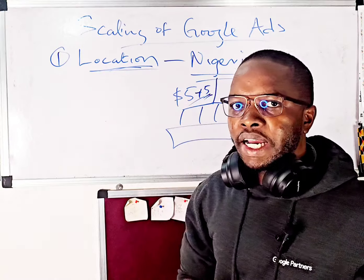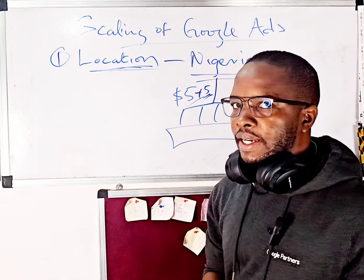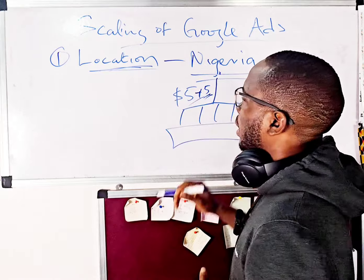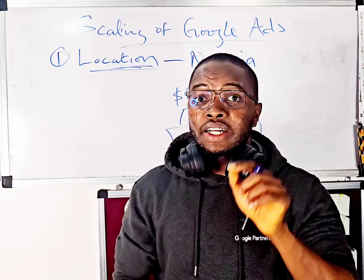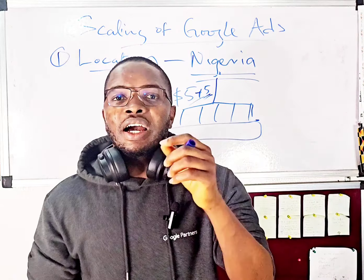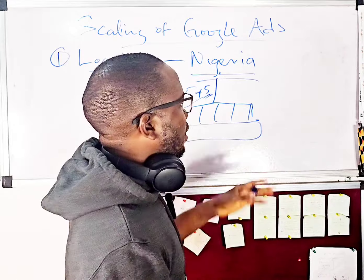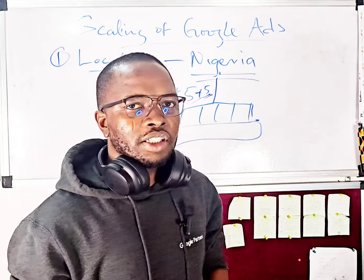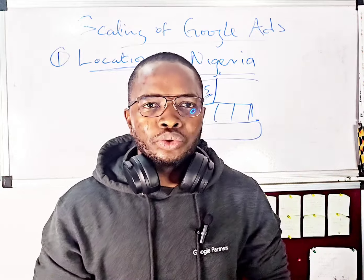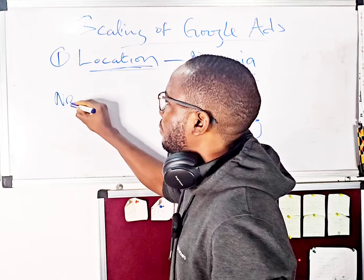What you want to do is look at the location data and identify which location is giving you the best results. You might realize that you are getting the best results only from Rivers State and Abuja. If that's the case, you don't want to stop your advertisement from serving in the other states, but the best thing to do is to create a new campaign targeting those best-performing states.